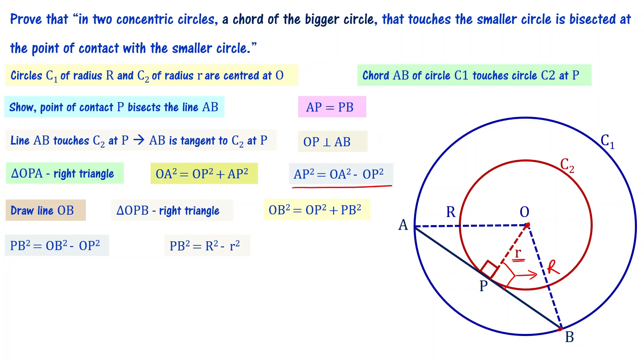From our previous equation, AP square equals OA square minus OP square. We substitute capital R and small r. OA equals capital R, OP equals small r. So we substitute AP square equals R square, capital R square minus small r square. The right hand side of these two equations are the same. So AP square equals PB square. We apply square root on both the sides, and we get AP equals PB.